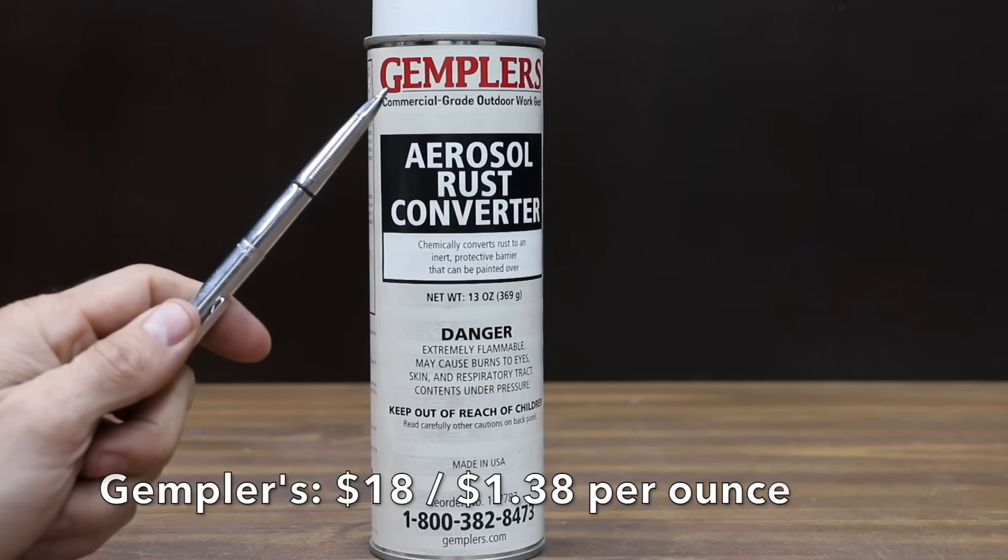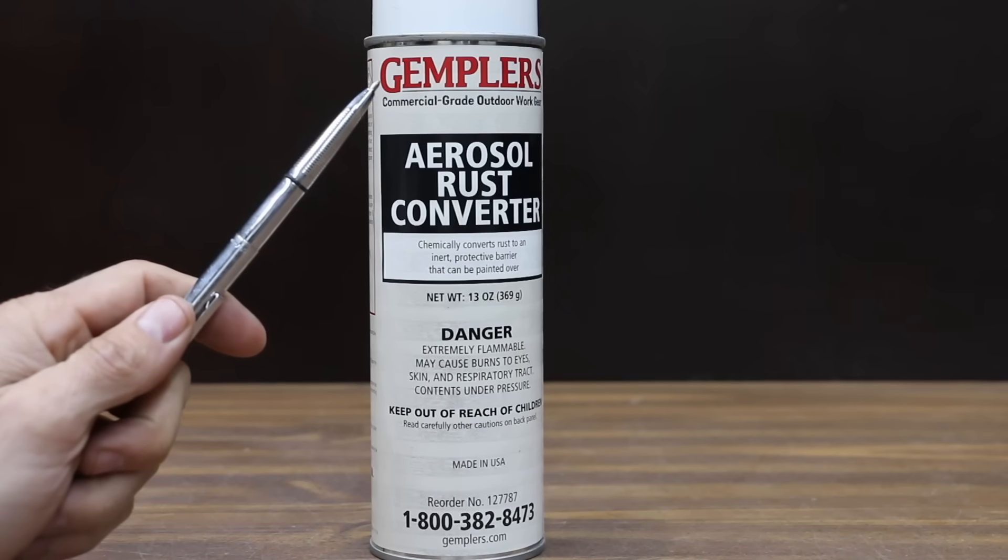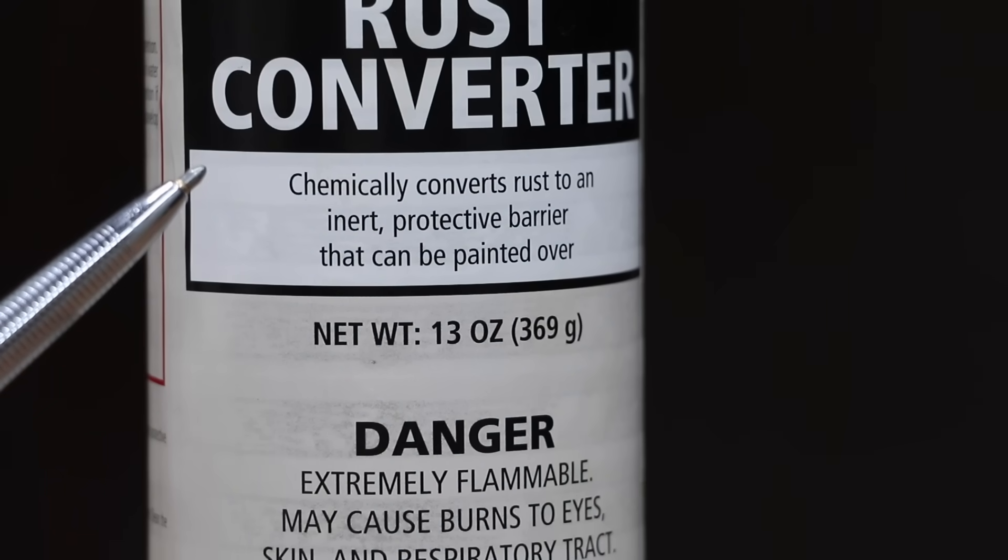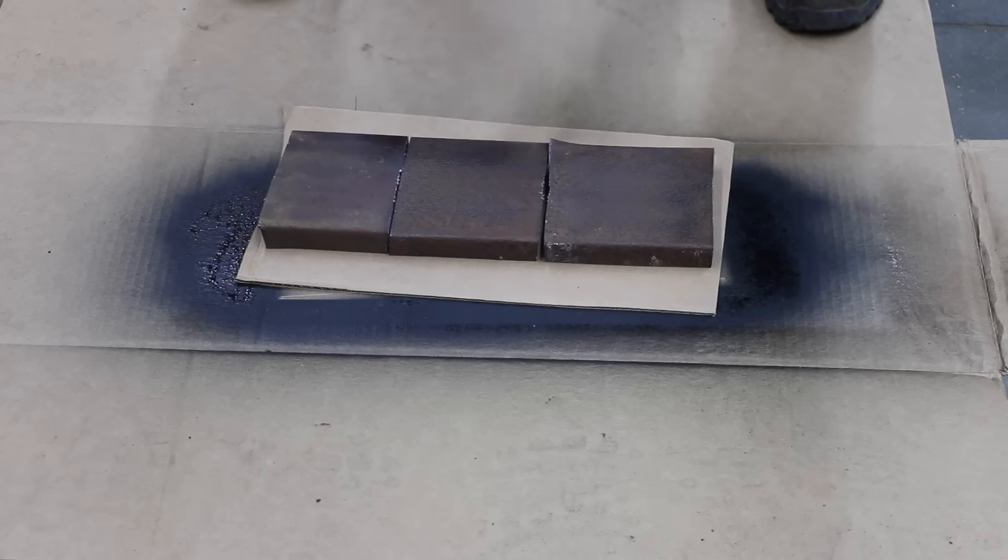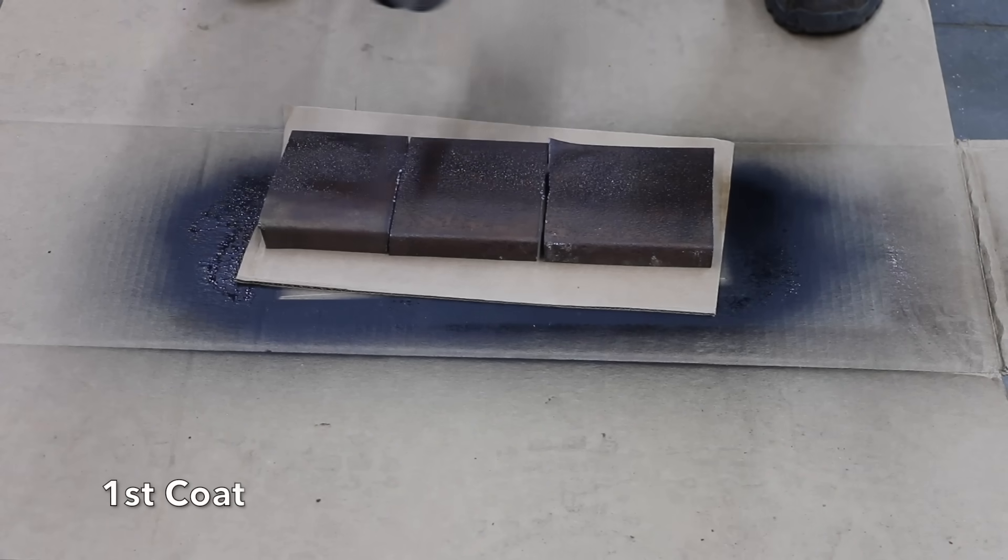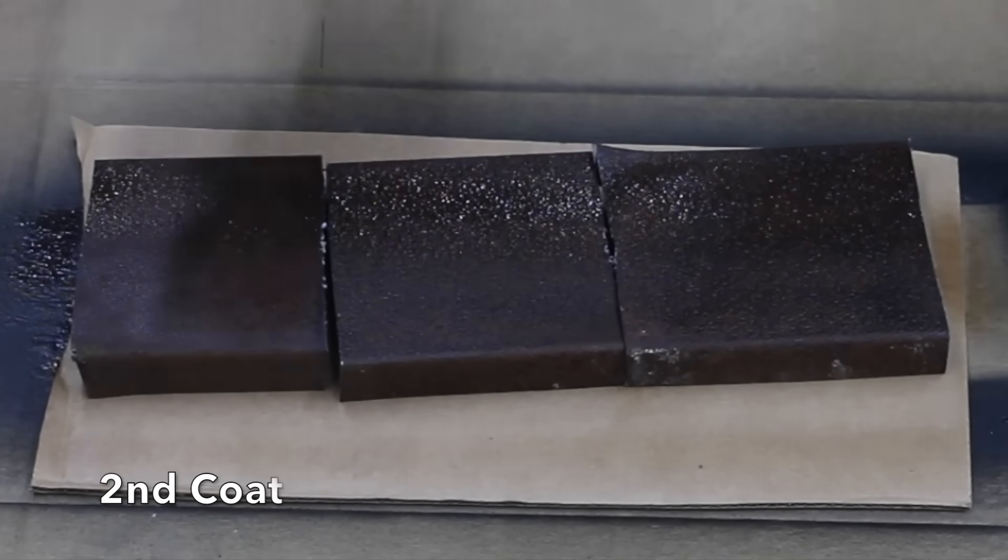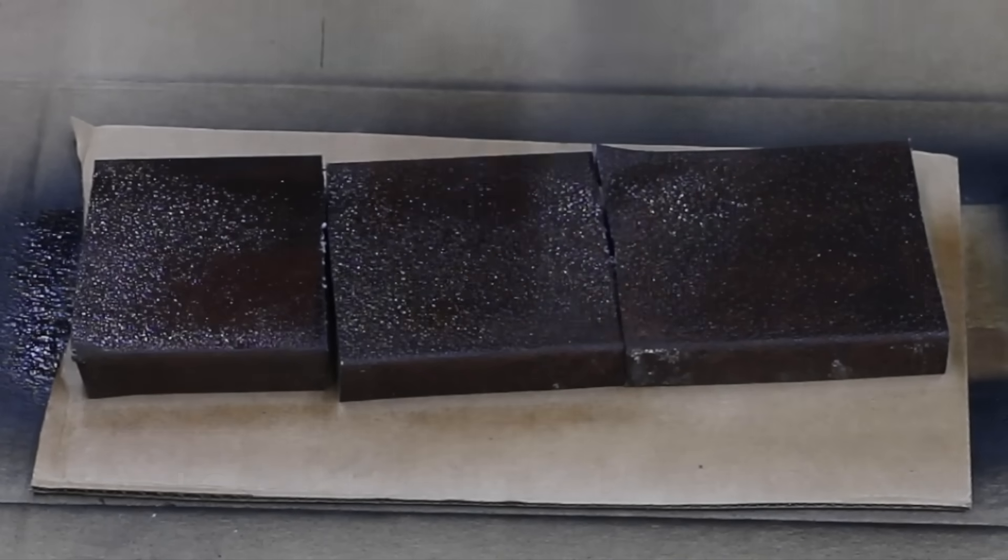At a price of $18 for 13 ounces or $1.38 per ounce is this Gempler's Aerosol Rust Converter. Chemically converts rust to an inert protective barrier that can be painted over. The Gempler's is made in USA. Hold can 8 to 12 inches from surface and spray a thin coat onto the surface. After the surface is dried, apply a second thin coat.